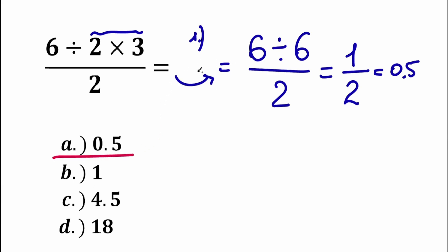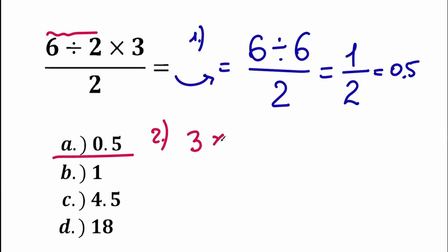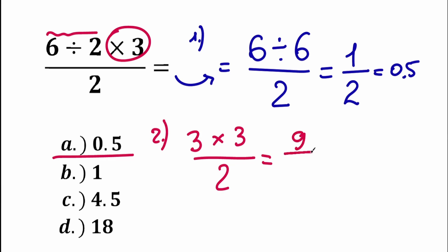A lot of students say that the second way is also correct. They say we're not going to multiply first — let's divide first. So we have 6 divided by 2 equal to 3. Then we have 3 times 3 divided by 2. As a result, we have 9 over 2, which equals 4.5. This is Option C.